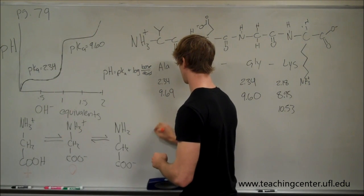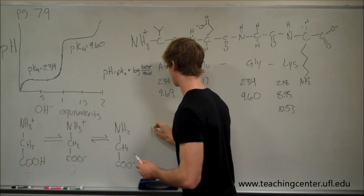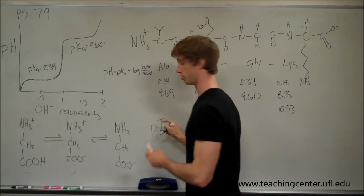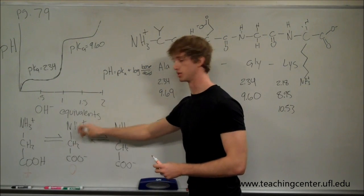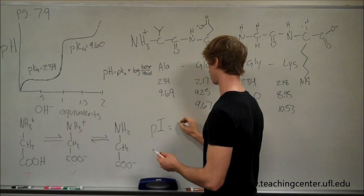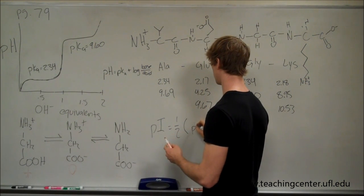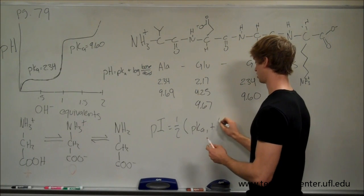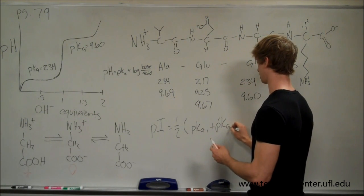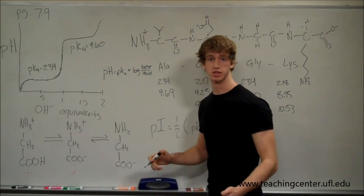This is the equation for the isoelectric point pI, which is the pH at which this species is dominant, we call the isoelectric point, is equal to the average, so just one-half times pKa1 plus pKa2. That's simple enough.